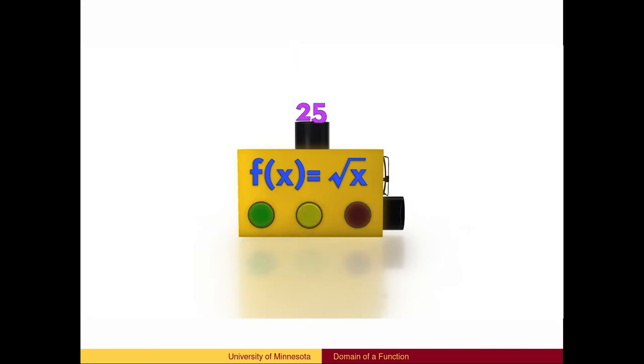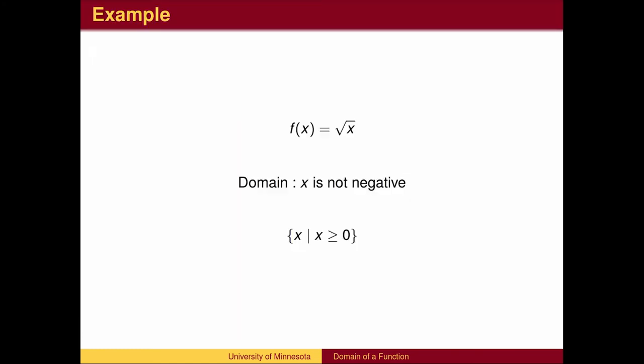Another common example is the square root function. We cannot plug negative numbers into the square root function. Formally, we say that the domain is all real numbers greater than or equal to 0.